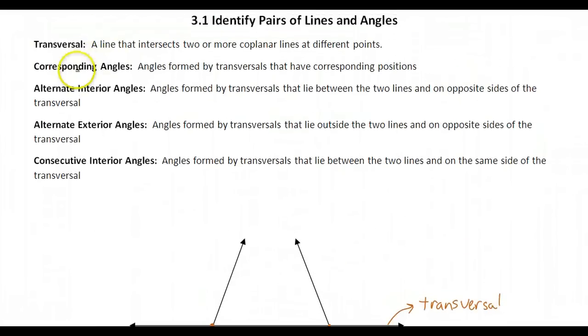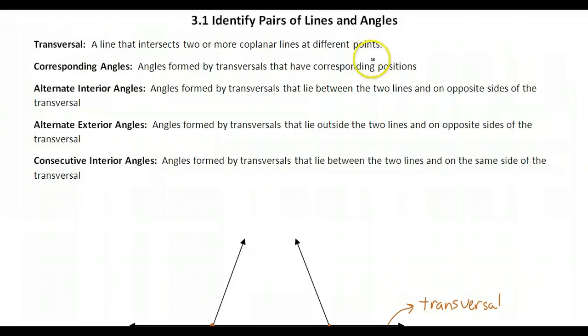Our second vocabulary word is corresponding angles. They are the angles formed by transversals that have corresponding positions. Corresponding means matching.